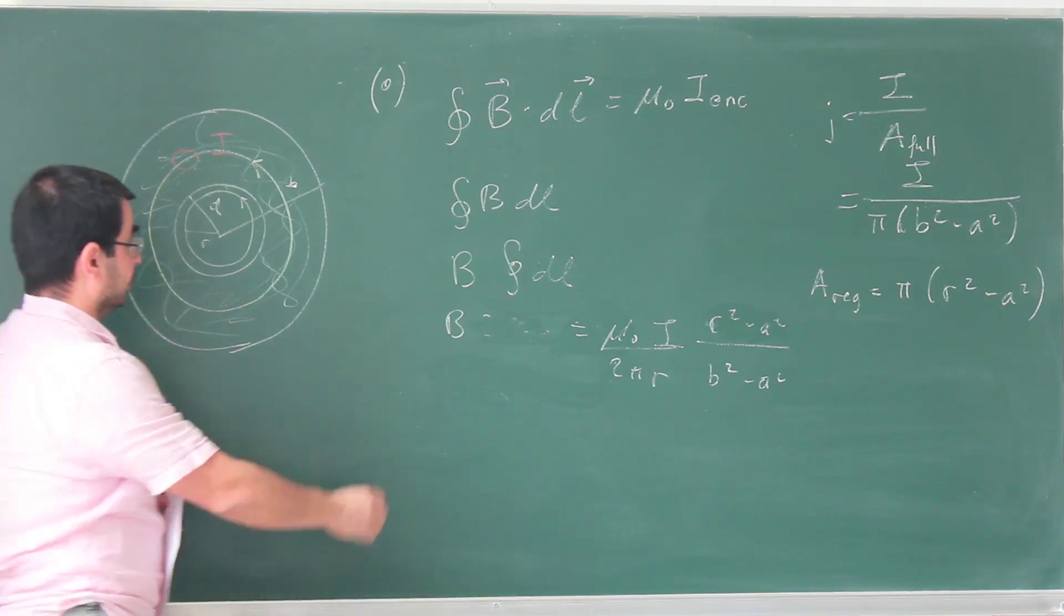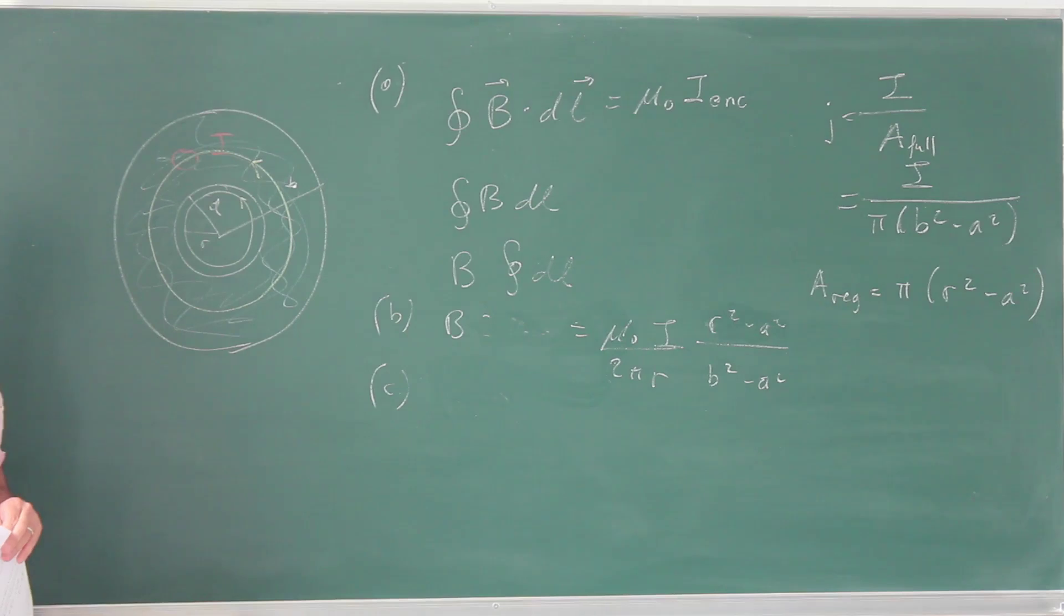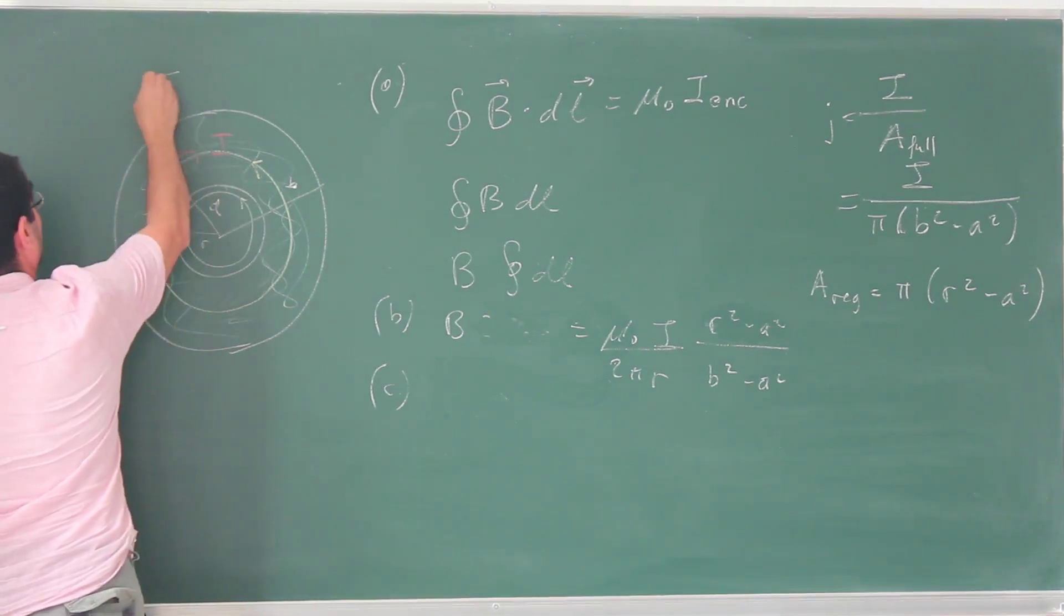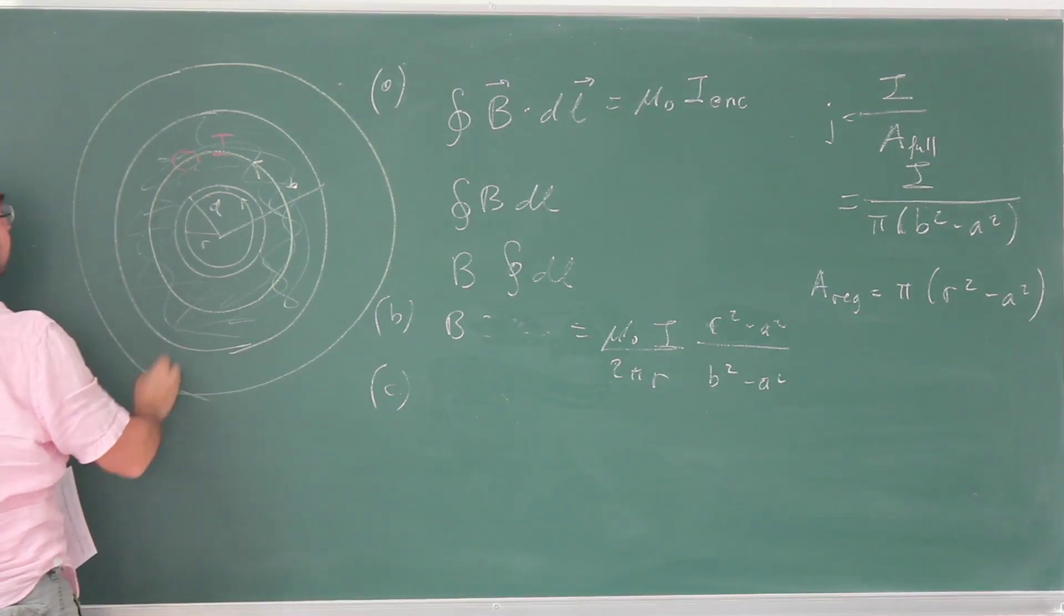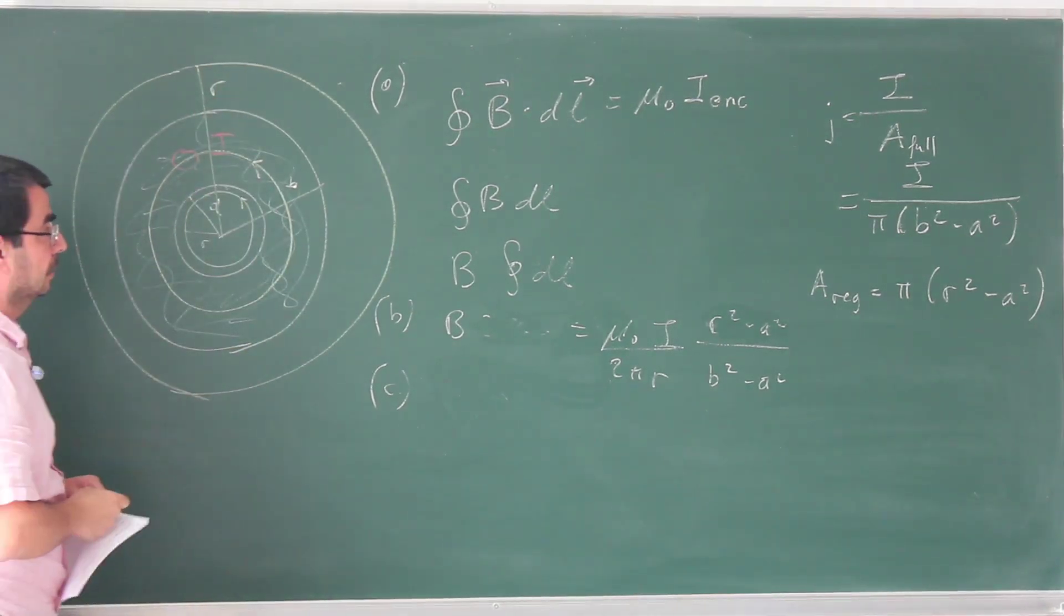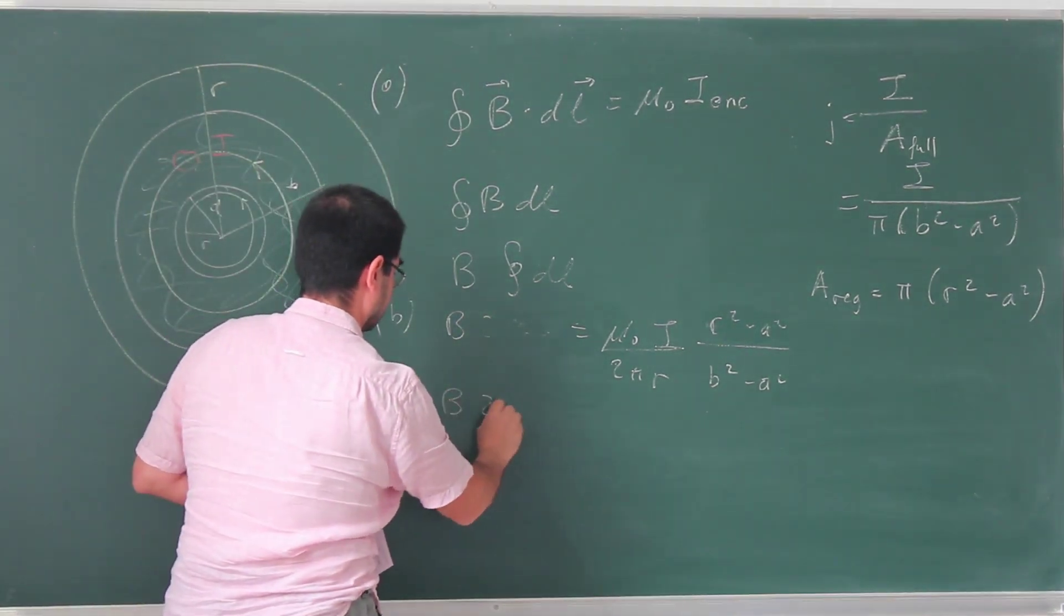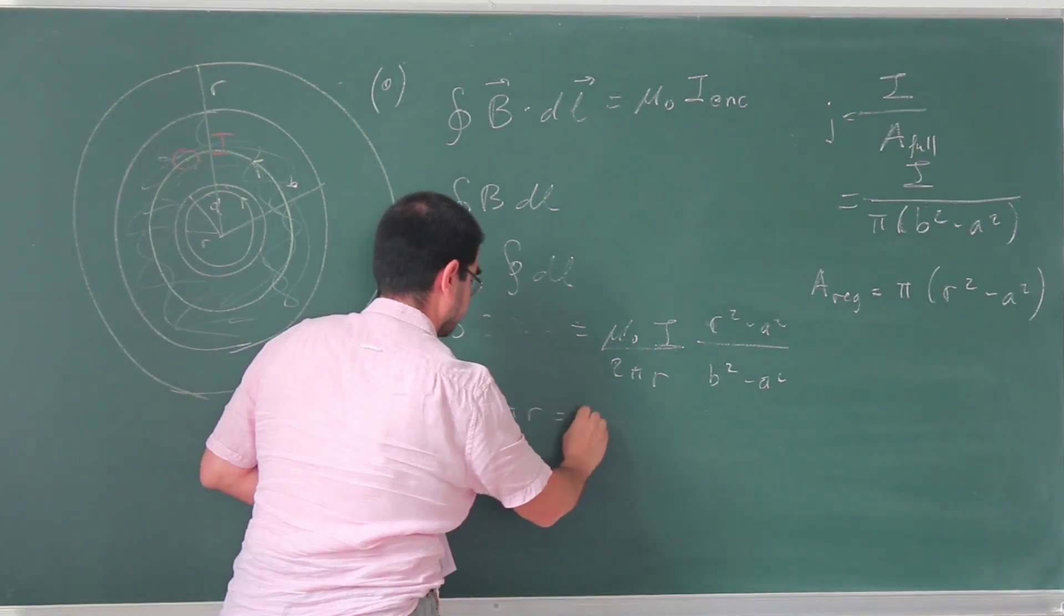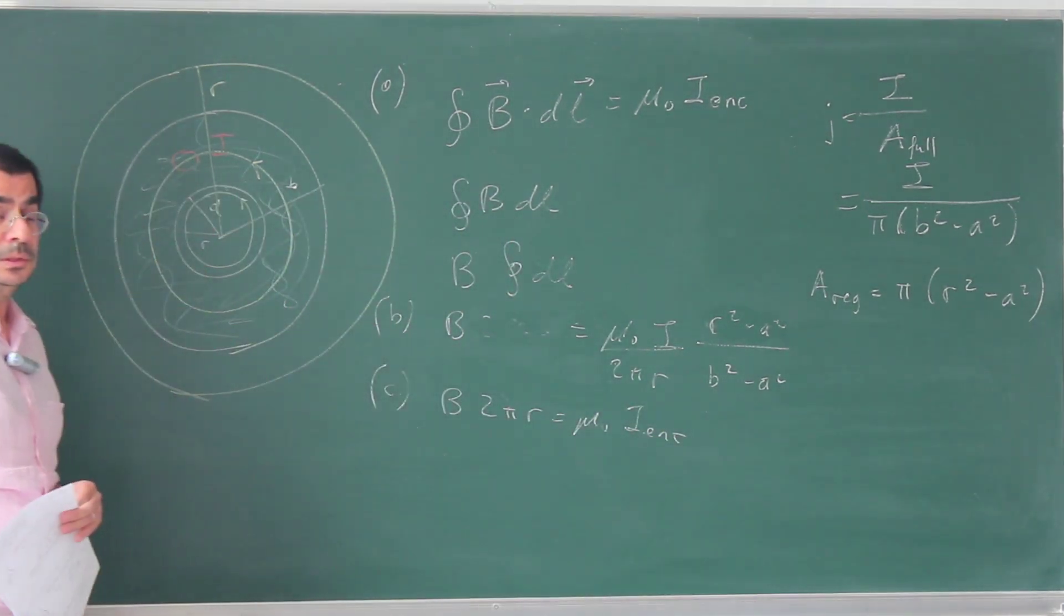Now, this was for part b. For part c, we, of course, are going to draw an Amperian loop that's outside, that has a radius r larger than b. So this is going to be our r now. Again, everything here is going to apply. We end up with B·2πr equals μ₀ I enclosed, except in this case, I enclosed is trivial.